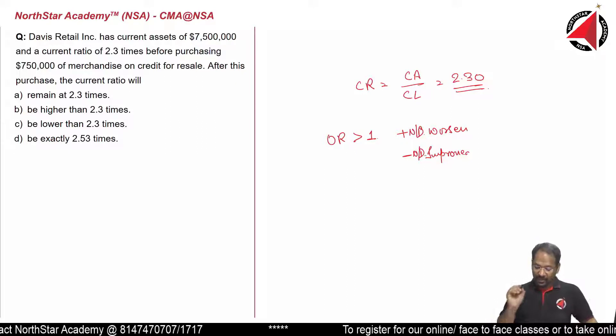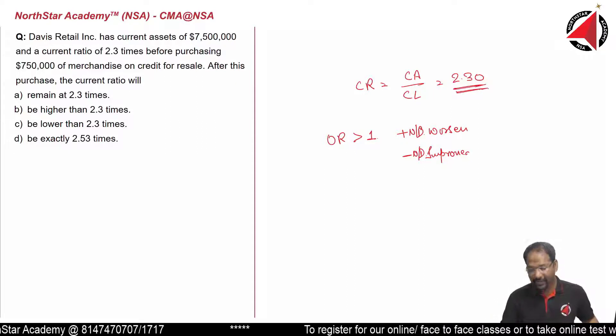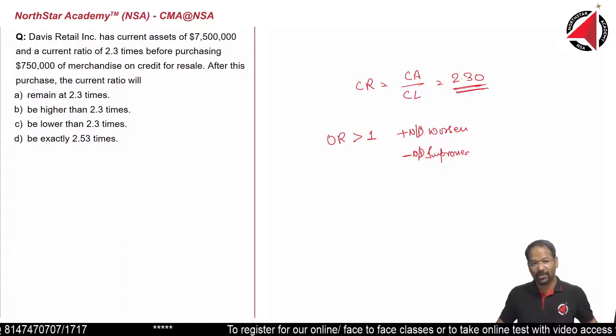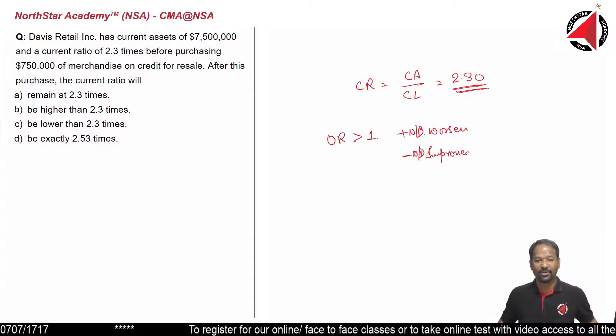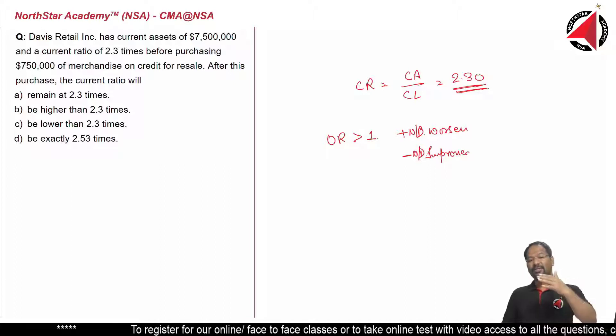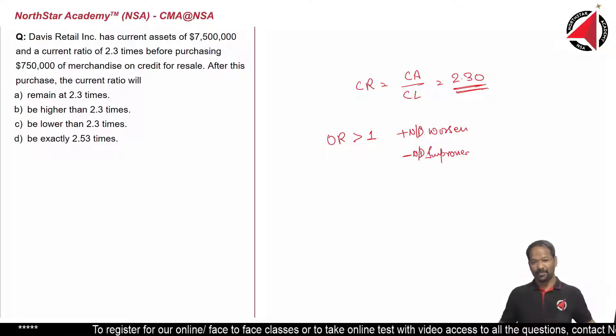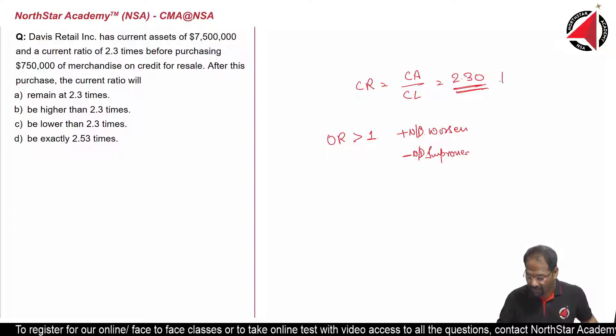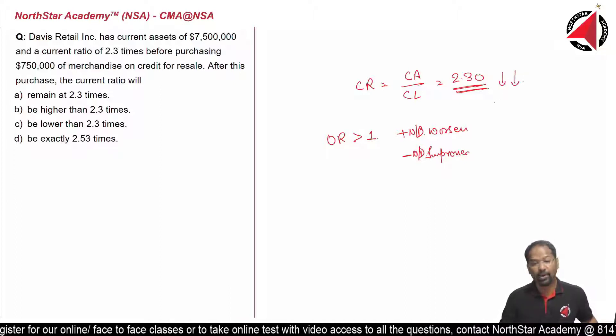Here, if you look at the original ratio is greater than 1, and if we are purchasing on credit, a constant number of $750,000 will be added both to the numerator as well as the denominator. What will happen to the resulting ratio? The resulting ratio will be lower than 2.3 times.